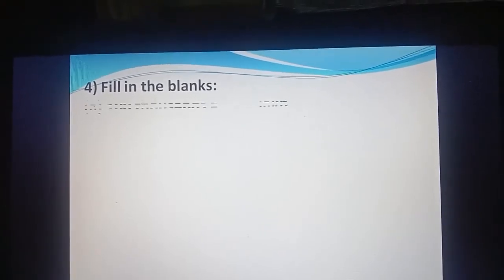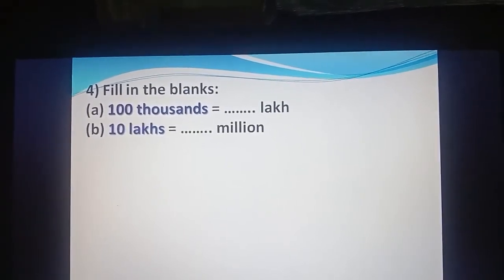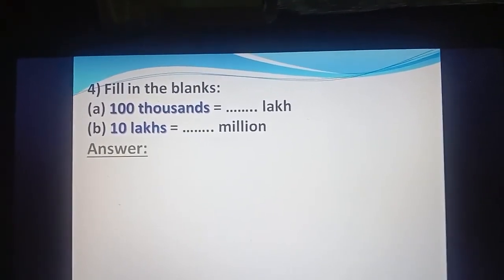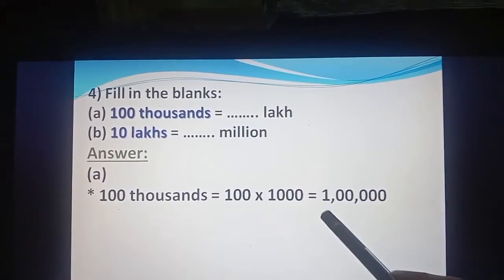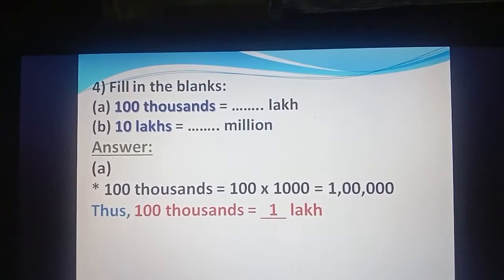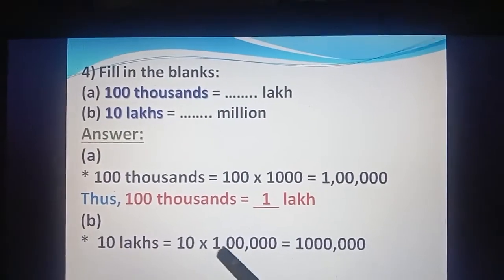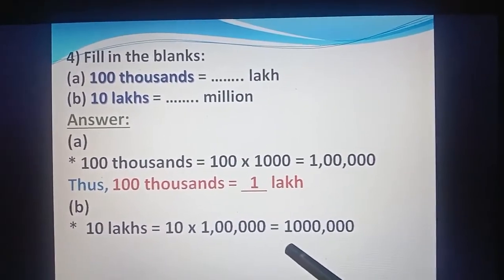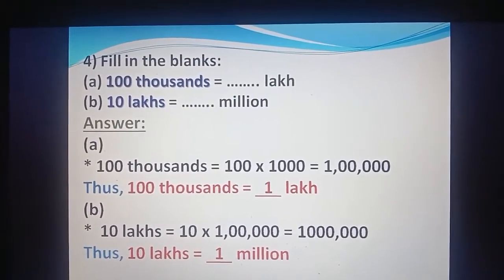Now come to question number 4. Fill in the blanks. A part: 100,000 equals how many lakhs? B part: 10 lakhs equals how many millions? Answer: A — 100,000 equals 100 × 1000, so it becomes 1 lakh. Thus 100,000 equals 1 lakh. B — 10 lakhs means 10 × 1 lakh equals 1 million. Thus 10 lakhs equals 1 million.